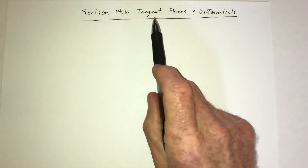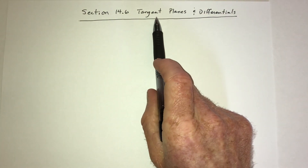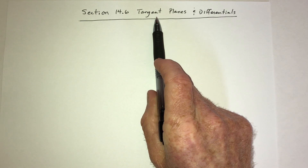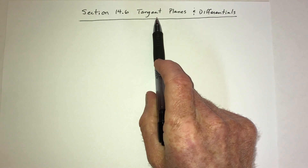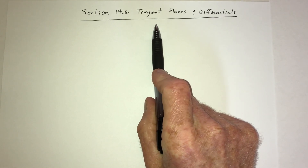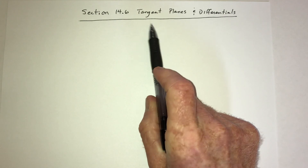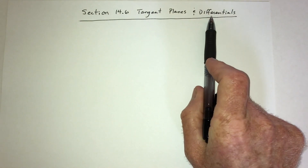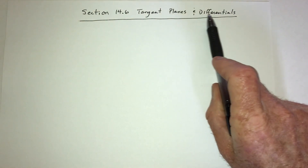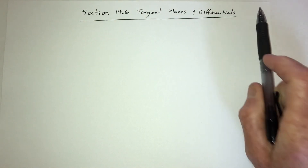Section 14.6 has a lot of important stuff in it. It covers tangent planes, normal lines, linearization, and differentials.